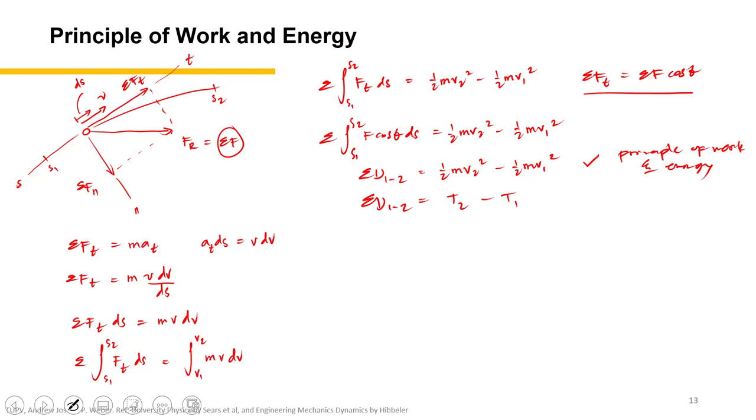Like work, kinetic energy is a scalar and it has units of Joule in metric system and foot-pound in FPS or English system. But unlike work, which can be either positive or negative, take note that kinetic energy is always positive. The kinetic energy T is always positive regardless of the direction of the particle.